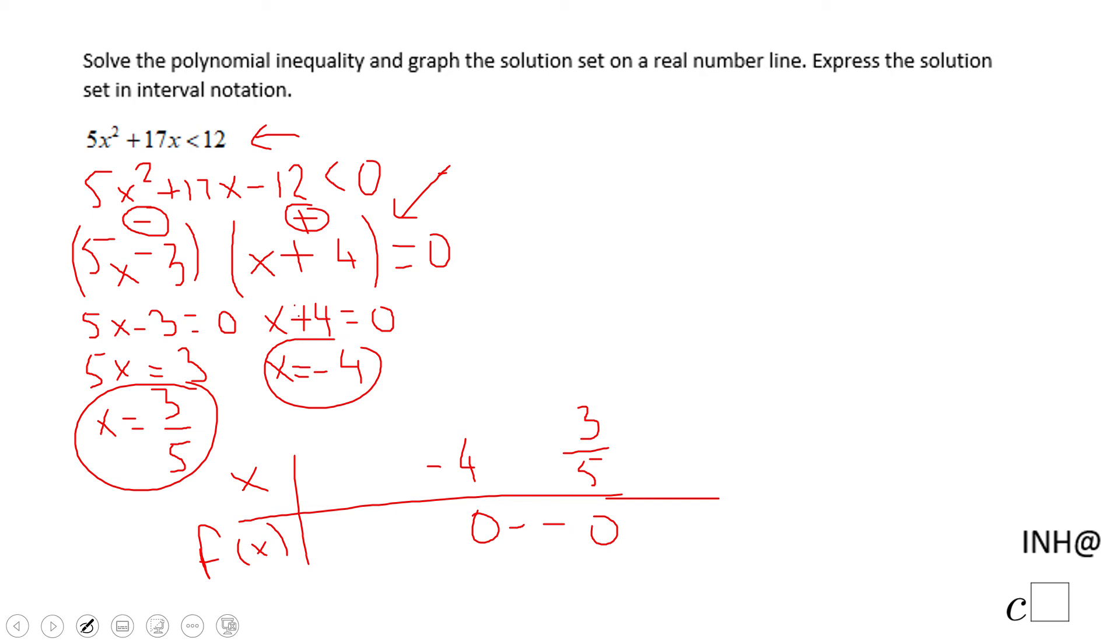The sign will alternate. You can check that 3/5, a number greater than 3/5 will be 1. I bet if you use 1 you're going to end up with a positive value, and the same for the number on the left of -4. If you pick -5 you will see the polynomial will be positive. So based on this sign table, this polynomial is less than 0 in the interval...